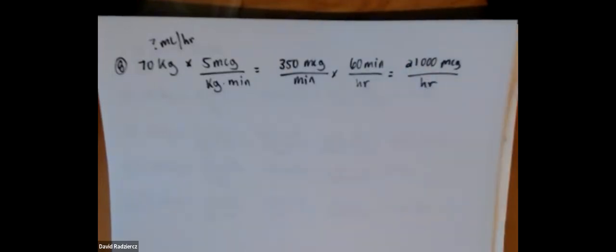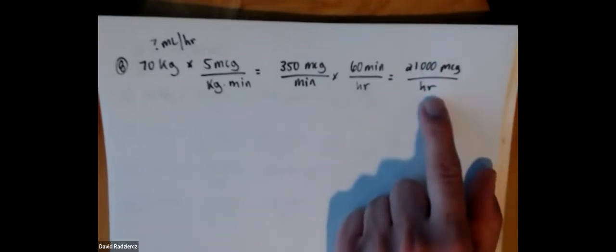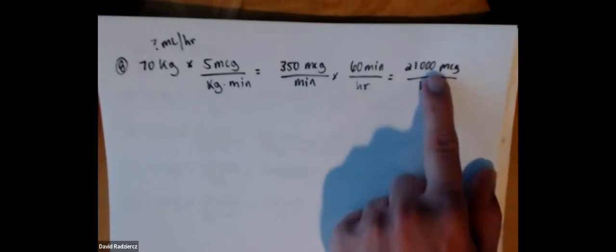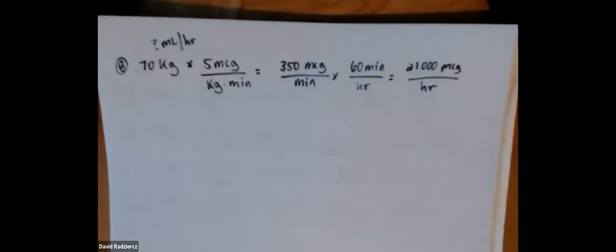Now, my available says 400 milligrams per 250 mL. So I have micrograms and I have milligrams, so I need to convert. You can move the decimal point three spaces to the left, so 21,000 micrograms is the same as 21 milligrams. Or you can do it the old-school way: one milligram is 1,000 micrograms, so it's 21.